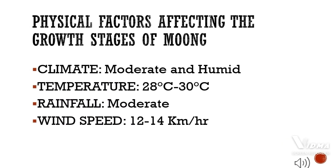Physical factors affecting the growth of crops include climate that is moderate and humid, temperature of 20 to 30 degrees Celsius, moderate rainfall, and wind speed of 12 to 40 km per hour.